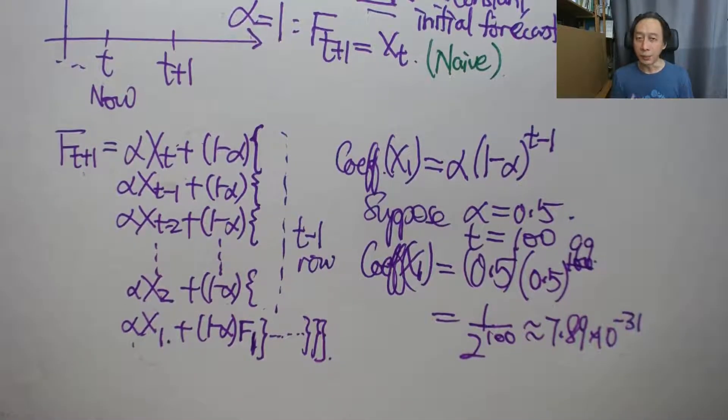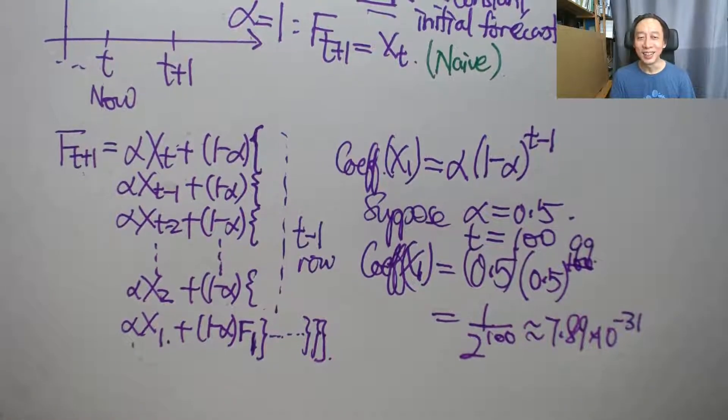So in this case, exponential smoothing actually achieves a lot by being simple, yet not being affected by our past forecast errors, also not being affected by very, very stale, outdated data. So in that sense, pretty state of the art.